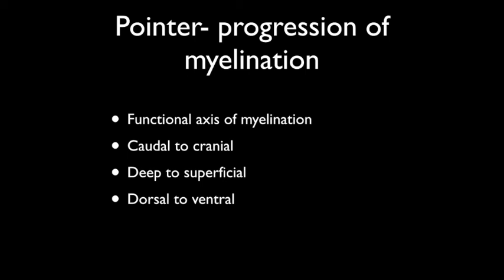An important thing to remember is the way how myelination progresses in a child. Most books describe this as a caudal to cranial progression. To understand this, it is better to correlate this as a functional axis of myelination. As the child does certain things in development, the myelination progresses in that particular form. For example, the child initially breathes, and so the dorsal brainstem is myelinated at birth so the child can breathe spontaneously. The periorlandic areas, which are required for the child to kick the legs and come out of the womb, those areas are myelinated at birth as well.